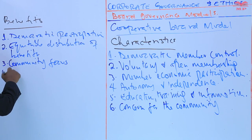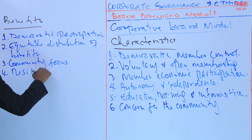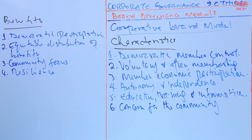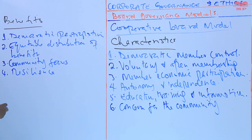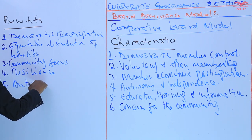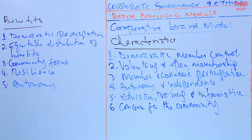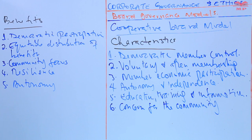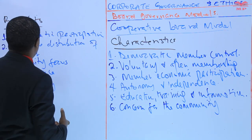The fourth benefit is resilience. The cooperative model can be more resilient to economic downturns due to its diverse ownership and focus on member needs, rather than solely on profit maximization. The fifth benefit is autonomy — cooperatives are self-governed and independent from external control, allowing them to make decisions that align with their values and goals.